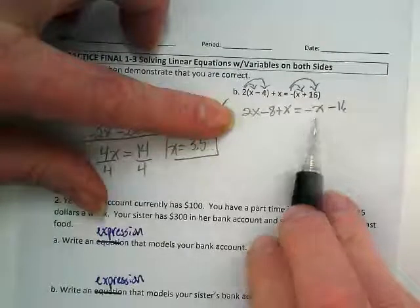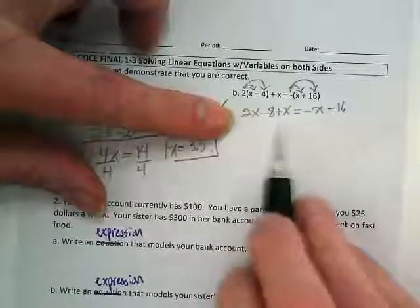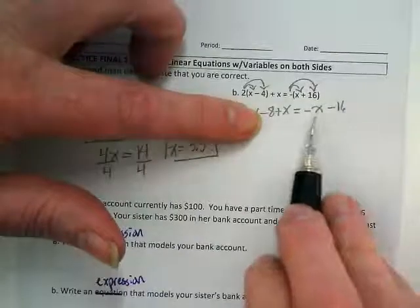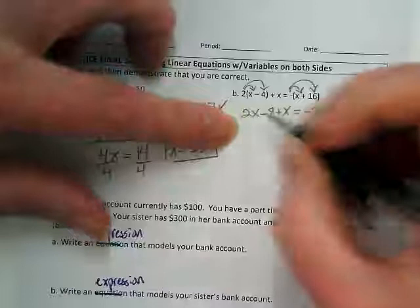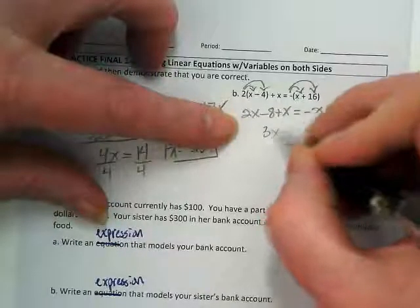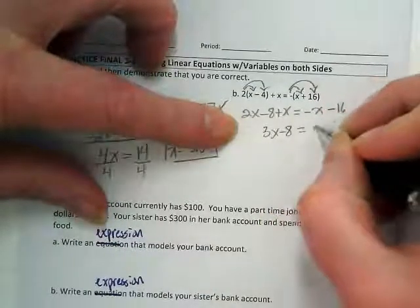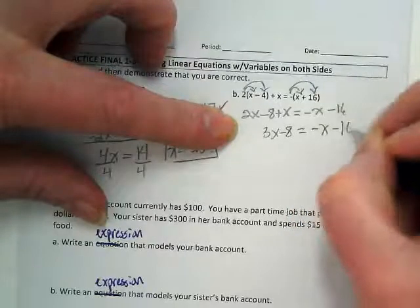Before I can start moving like terms to either side of the equal sign, like I want to get this 8 with this 16 and I want to get this x with this x and this x, first I have to combine these like terms. So 2x plus x is 3x minus 8 equals negative x minus 16.